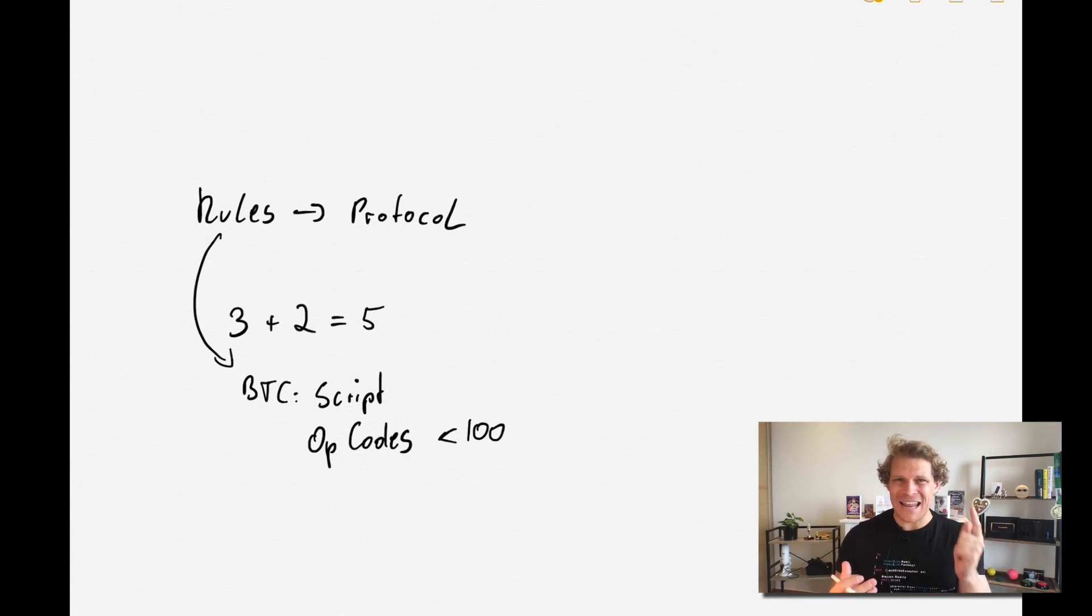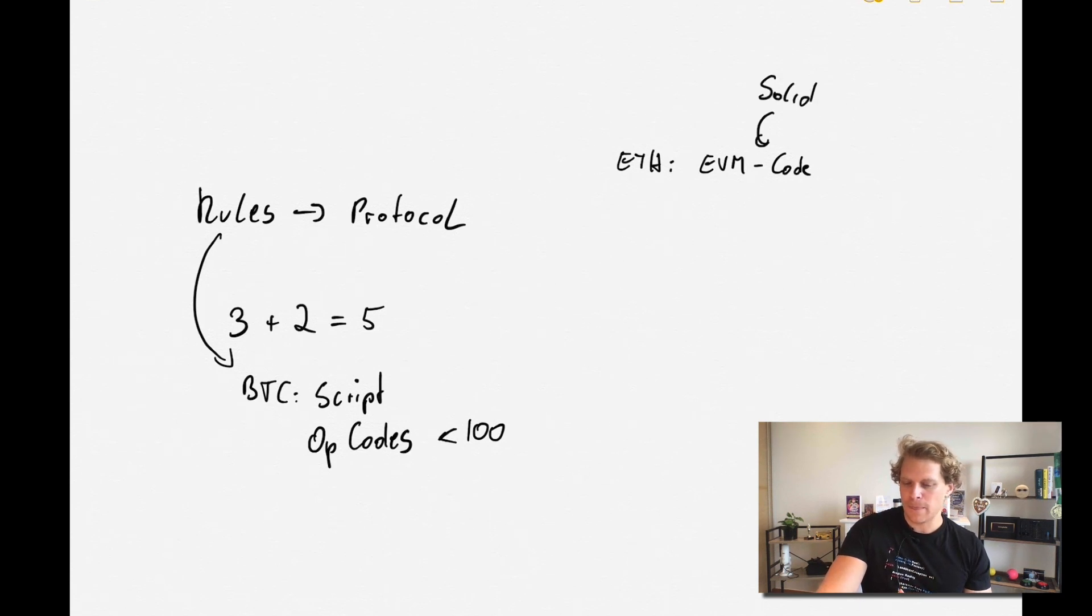Now if we then go and say, okay, let's think of Ethereum. Ethereum in this case has the Ethereum Virtual Machine code that basically compiles, and let's discuss what this actually means. So it has this Ethereum Virtual Machine code, and this gets compiled down by Solidity. But now it gets very interesting - where is the Script coming from, where's the Solidity coming from, what does this actually mean?